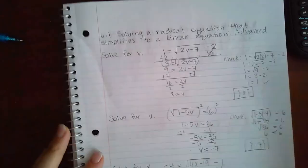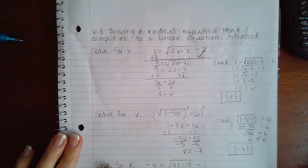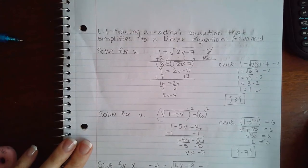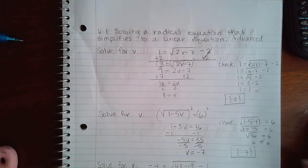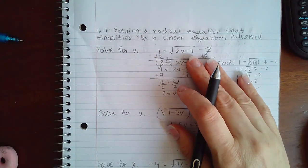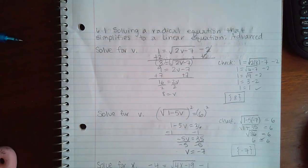Okay, I accidentally did this problem without hitting record, so I'm going to walk through it. Section 6.1 is solving a radical equation that simplifies to a linear equation. The first thing you need to do is isolate your variable.